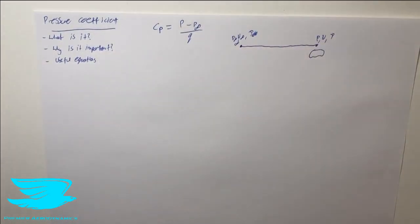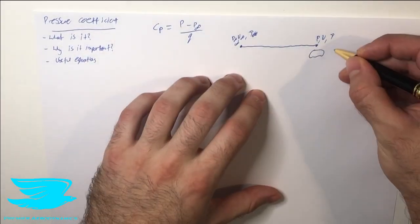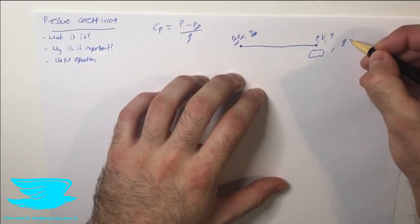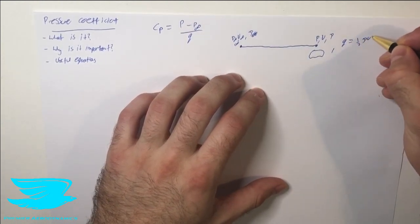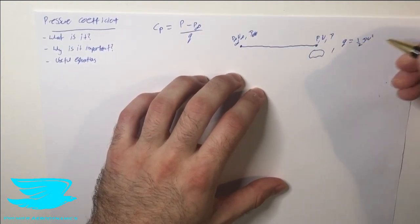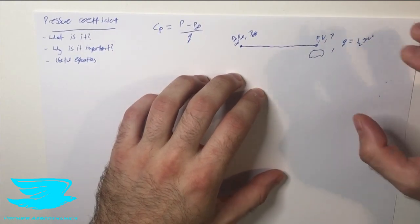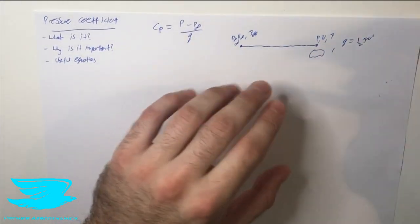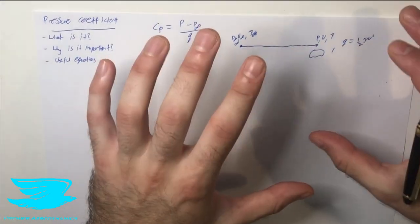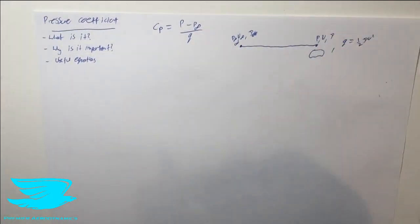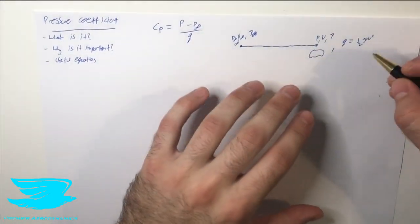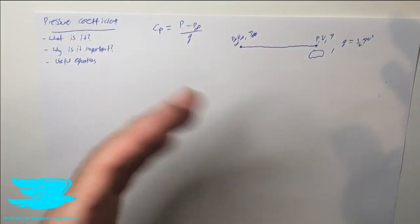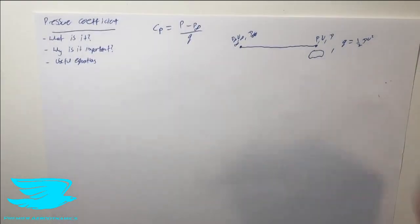Now q — what is q? q is something called the dynamic pressure. If you don't know what this term means, check out our video number six in the Aero Fundamentals course, where we go through dynamic pressure as well as static pressure and total pressure. So q, which equals the dynamic pressure, equals half times the density times the velocity squared, anywhere in the flow.